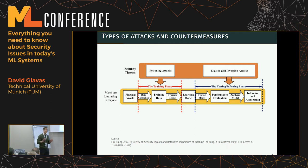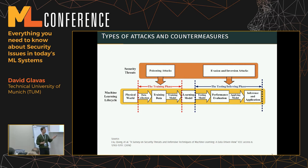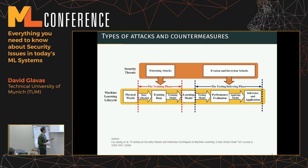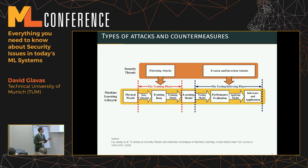We also differentiate between evasion and impersonation attacks. In evasion attacks the model is already trained, so the attacker modifies the input — for example, tweaking words in spam so the detector is less likely to flag it. Impersonation attacks involve modifying an input so it gets classified as a different identity, like making one person's face be recognized as another person's face.